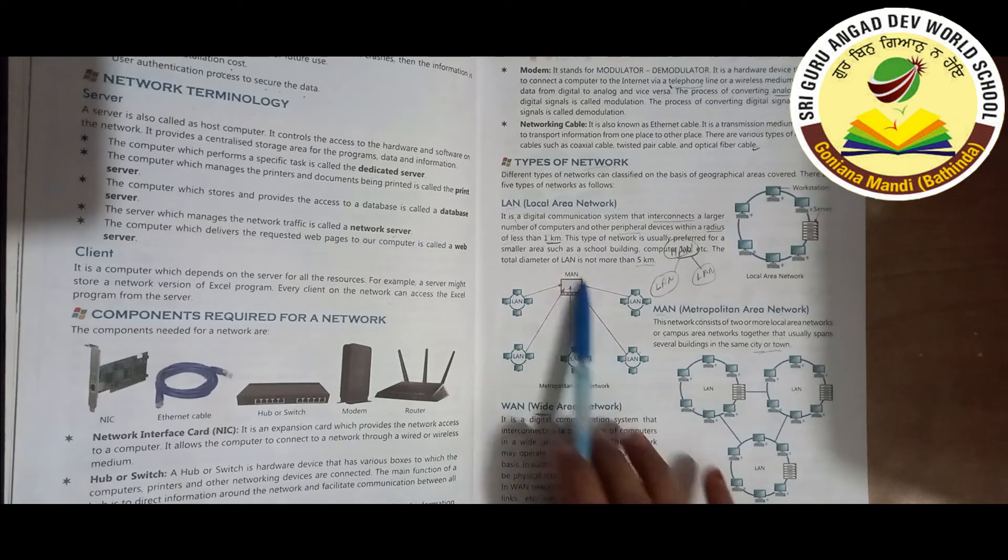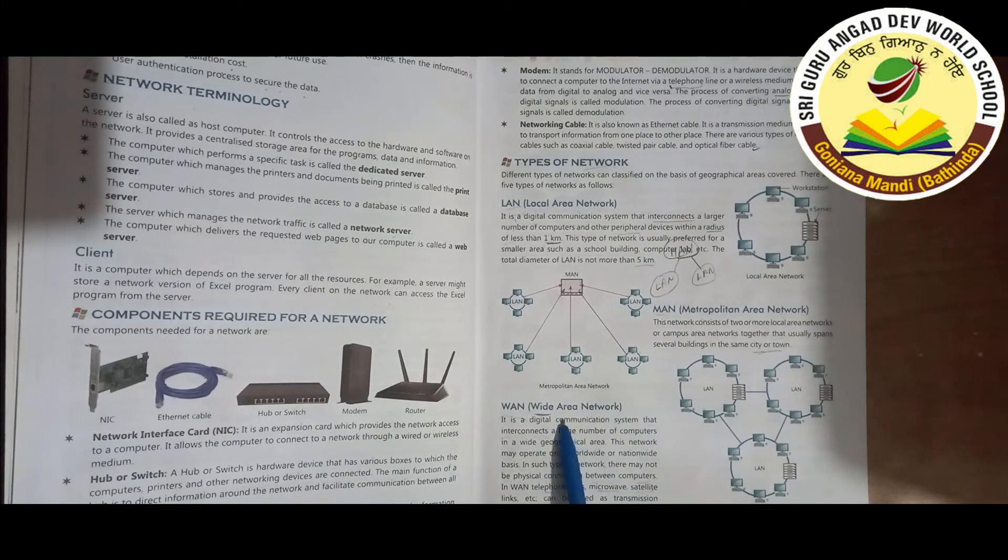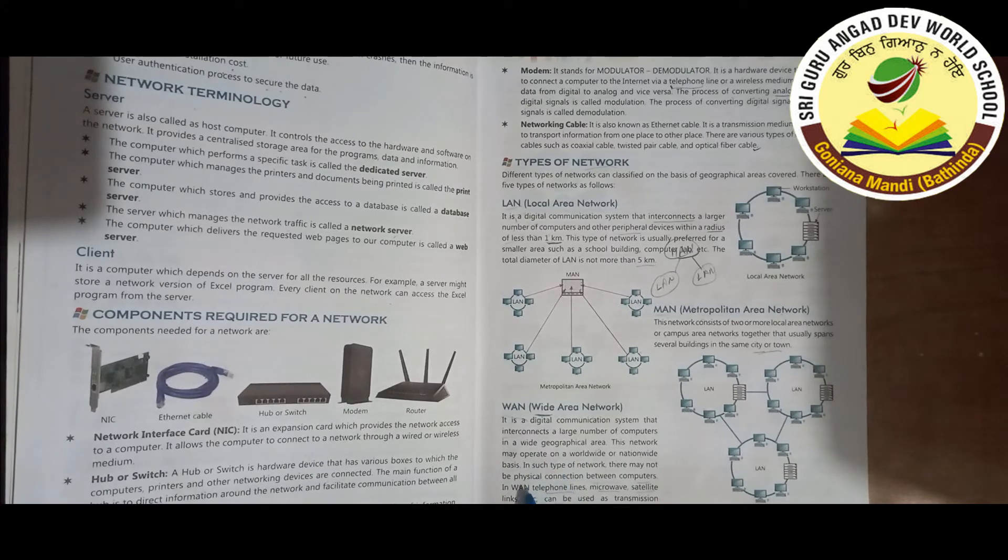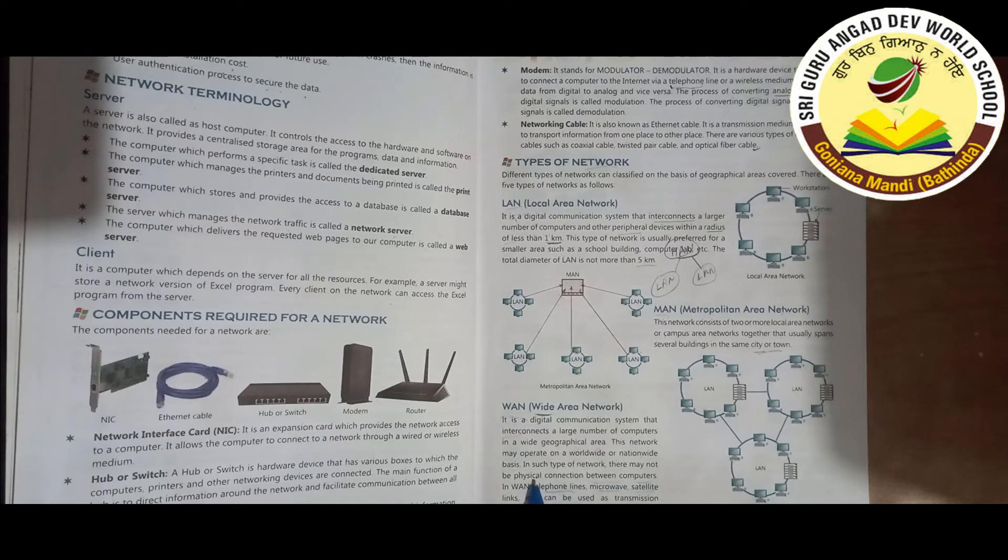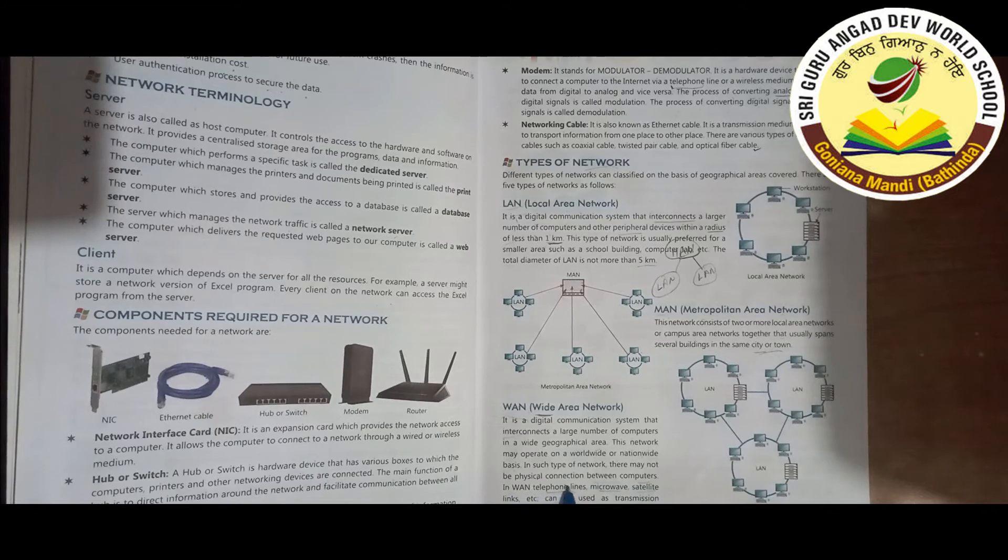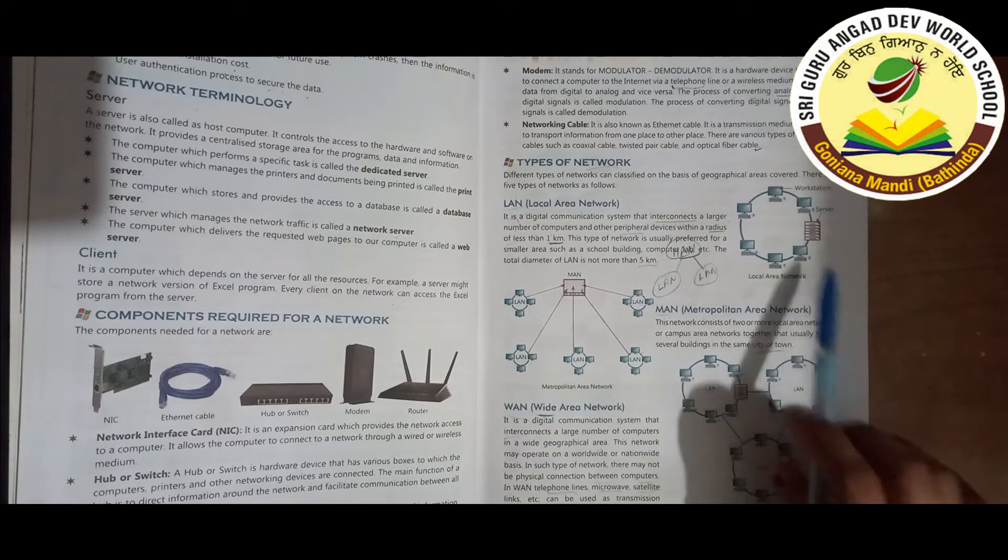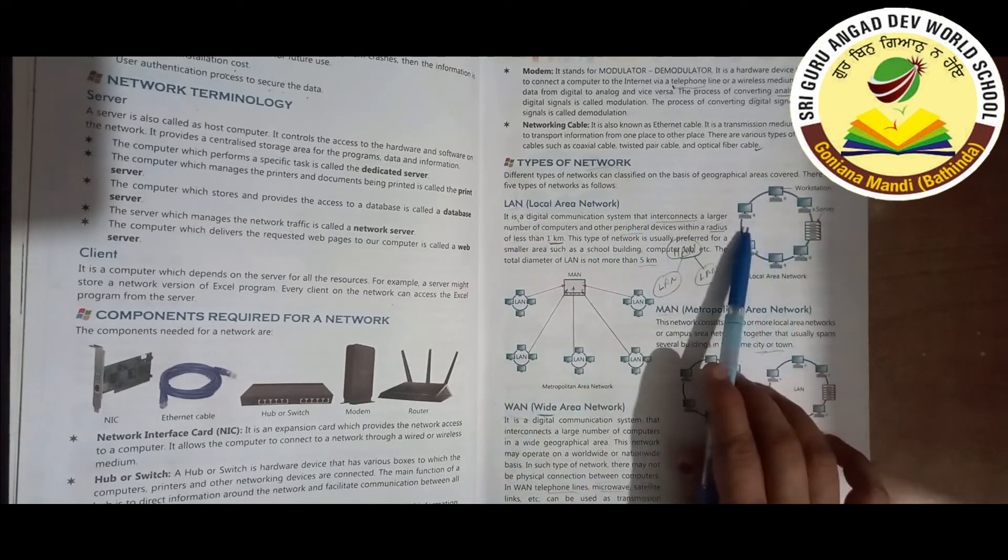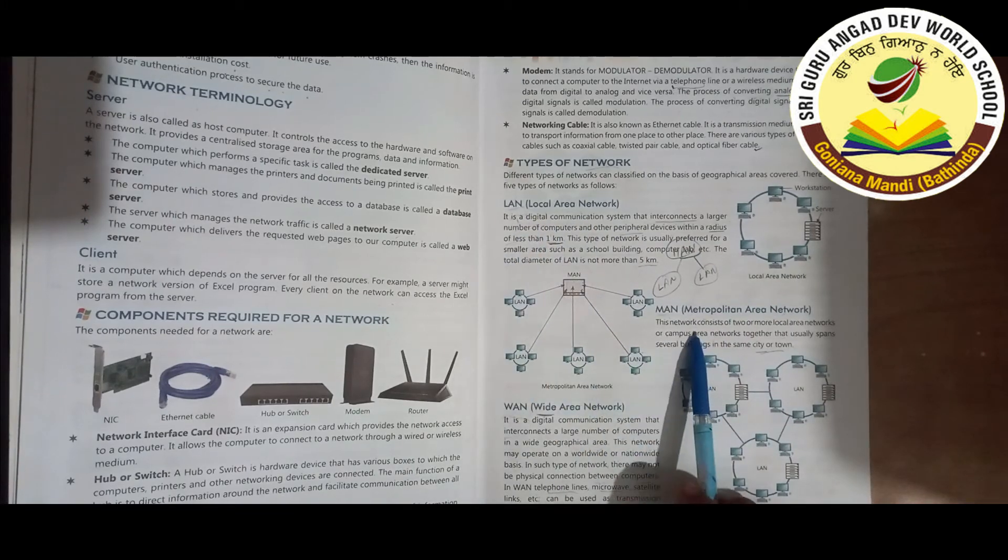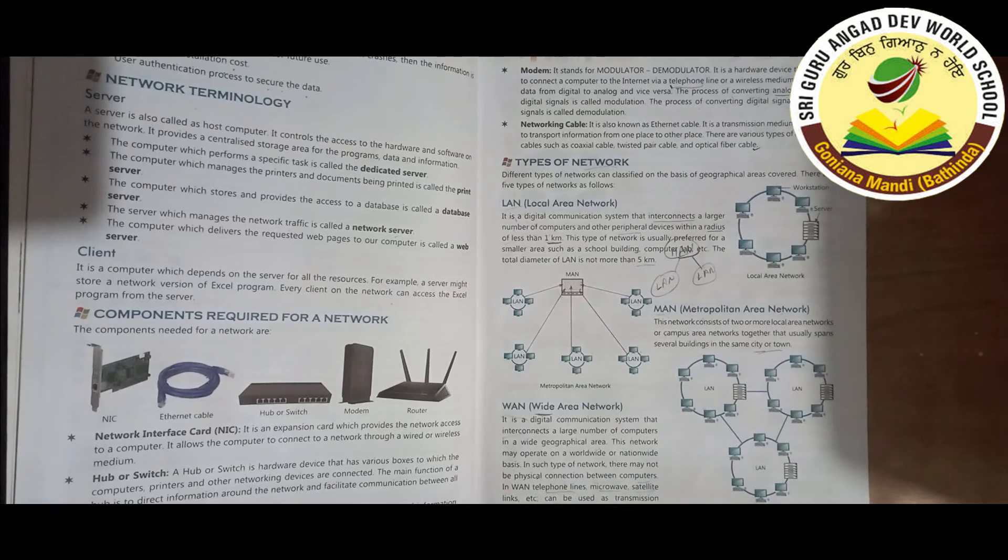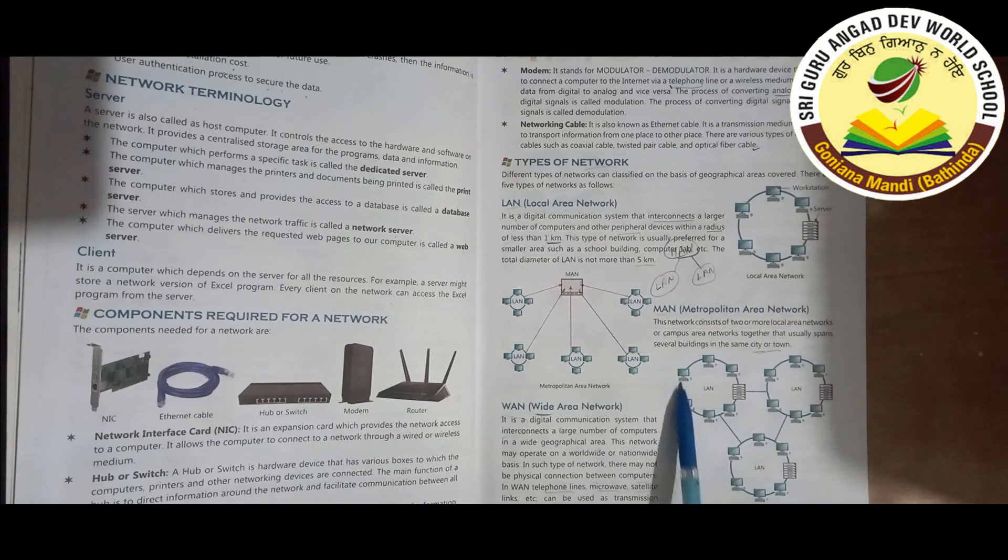This is the Metropolitan Area Network, MAN. Next is WAN, Wide Area Network. It is a digital communication system that interconnects a large number of computers in a wide geographical area. This network may operate on a worldwide or nationwide basis. In such type of network there may not be physical connection between computers. Telephone lines, microwave, satellite links can be used as transmission medium.